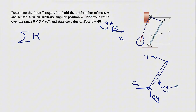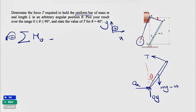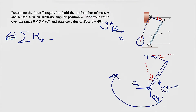We'll use the equilibrium equation - sum of all moments about point O - to eliminate all the unknowns at O and find the relationship between T and the weight of the bar. We know this angle is theta, and we'll call the angle the cable makes with the horizontal alpha.